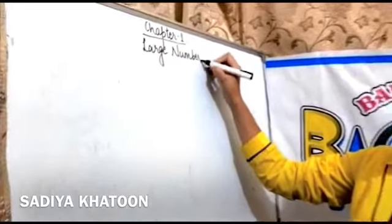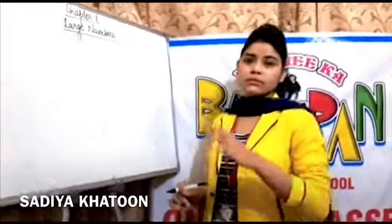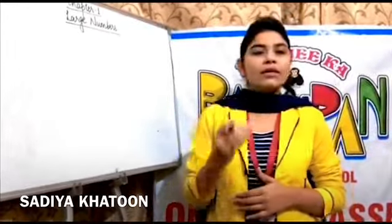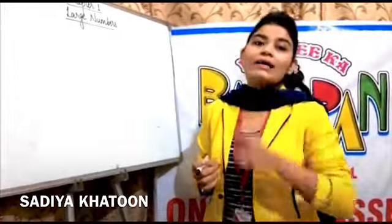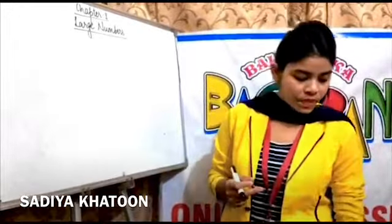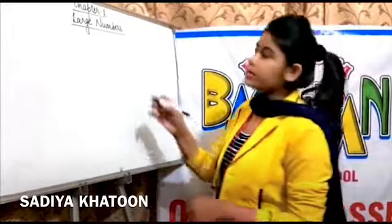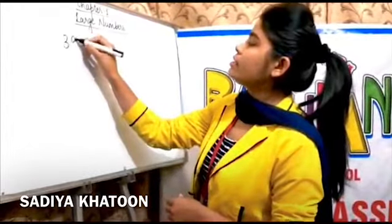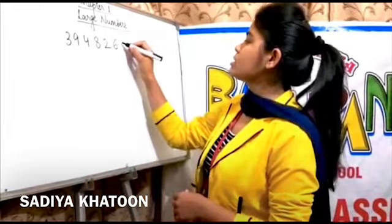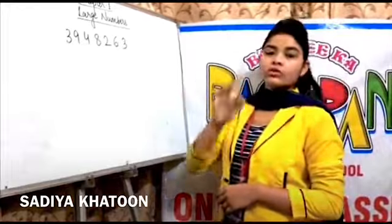The topics involved in this chapter are as follows. So far you have studied numbers only up to lakhs, but now you will move to crores also. I'm taking the example of one number: 3,948,263.